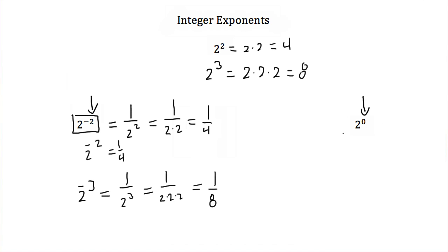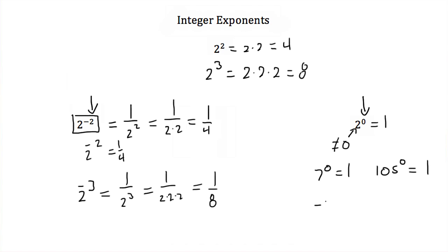Now what if we have a zero power? As long as our base doesn't equal zero, any number other than zero to the zero power is just equal to 1. So 7 to the zero would be equal to 1. 105 to the zero power is equal to 1. Negative 7 to the zero power is also equal to 1.